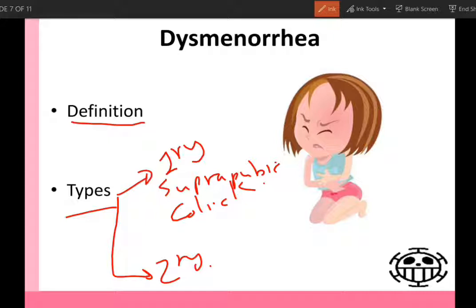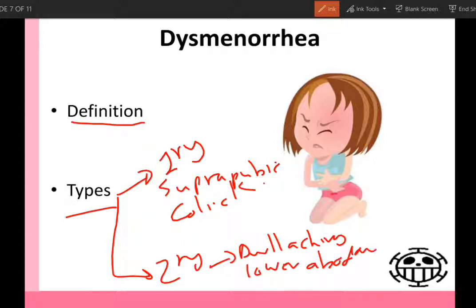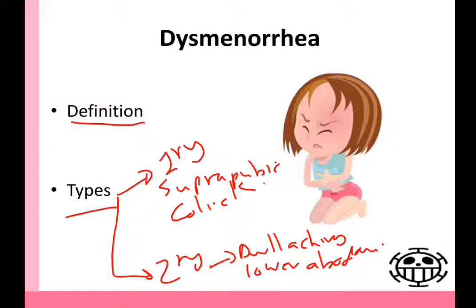Secondary dysmenorrhea, which is called congestive, involves a pelvic lesion — maybe a tumor, maybe adenomyosis, endometriosis, maybe an intrauterine contraceptive device, or maybe inflammatory bowel disease. The pain is a dull aching pain in the lower abdomen, starting a few days before menstrual flow, and with increased menstrual flow the pain decreases. So it's very important to know if the female patient has dysmenorrhea and what is the type of dysmenorrhea.